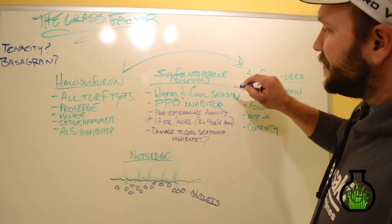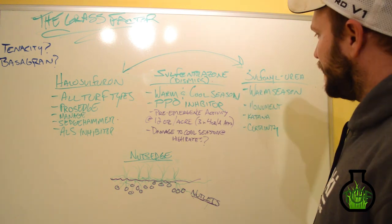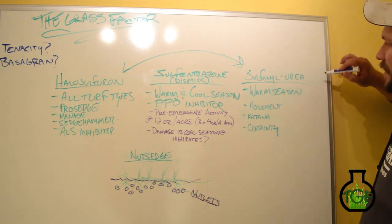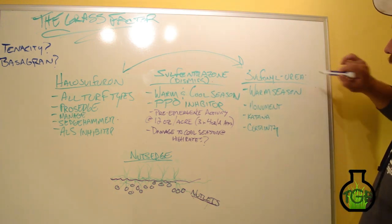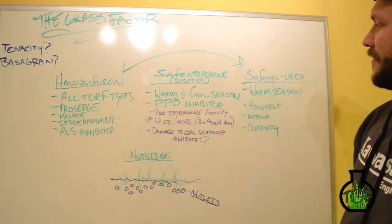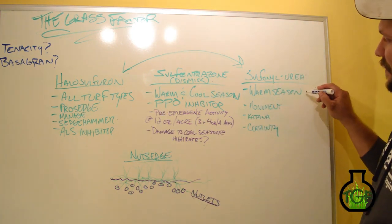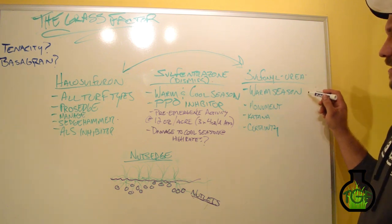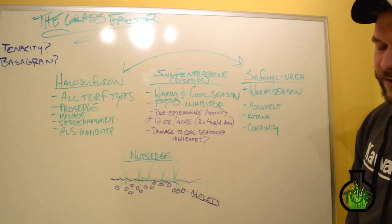The other will be sulfentrazone, also known as dismiss. And then third, we will also be talking about sulfonylureas, which also encompasses halosulfuron, but I'm going to be talking about the ones that more pertain to warm season grass types like monument, katana, and certainty.